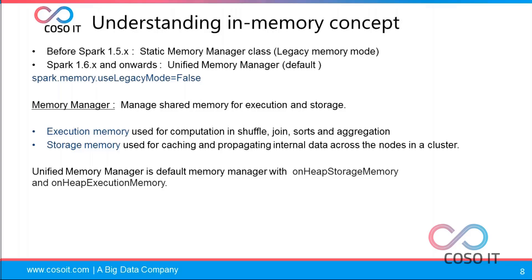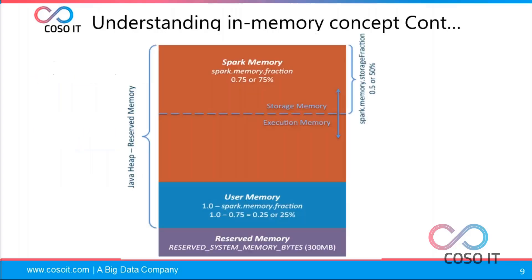Execution memory is used for computations like shuffling, joins, sorting, and aggregations — it requires intermediate processing of key-value pairs. Storage memory is used for caching resources, storing cache data, and internal data movement across nodes.